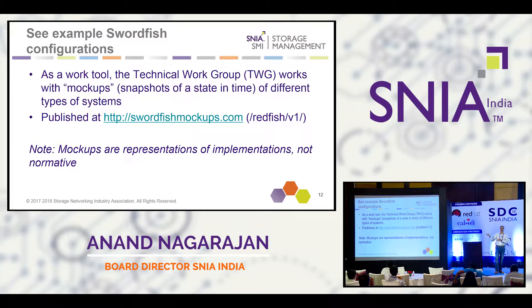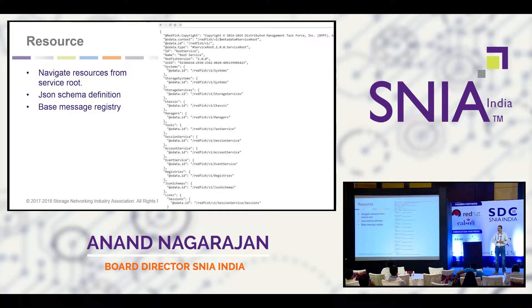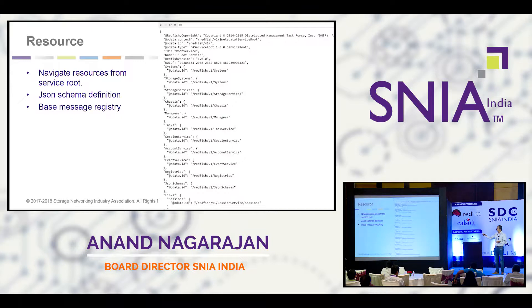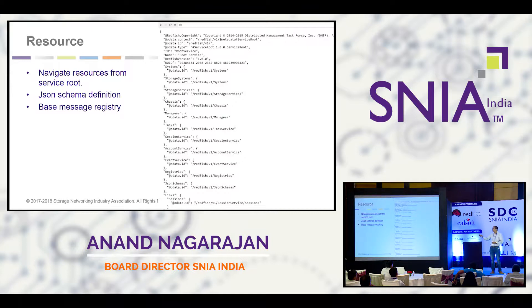Whatever resources I spoke about can be found in some of the mockups which we provide in Swordfish. This is how a mockup would typically look to you - this is the JSON representation of a resource. You will find a bunch of OData annotations. These are metadata which describe the resource itself. You will see a lot of key and value pairs here. Whatever is represented by OData ID provides a reference to a different resource. At any point, you can access a resource through a single URI.